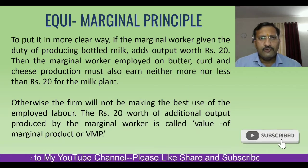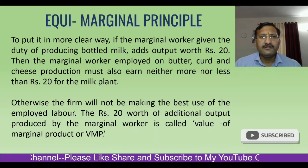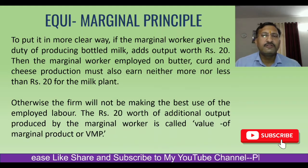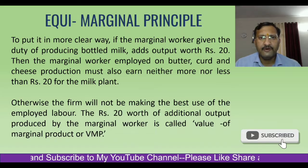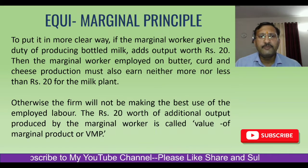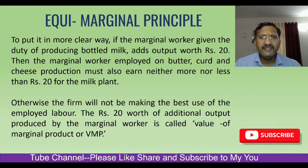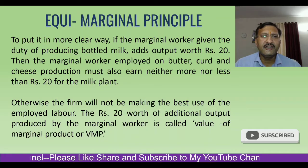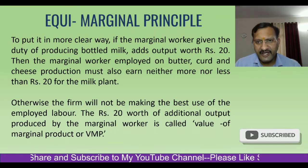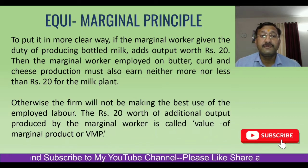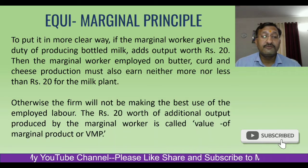To see it in a more clear way: if the marginal worker given the duty of producing bottled milk adds output worth rupees 20, then the marginal worker employed on butter, curd, and cheese production must also earn neither more nor less than 20 for the milk plant. Otherwise, the firm will not be making the best use of the employed labor.